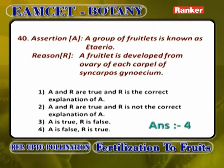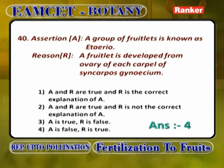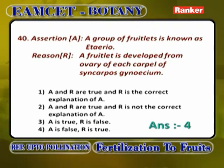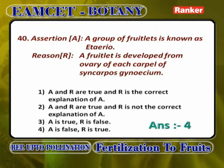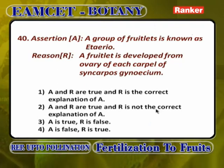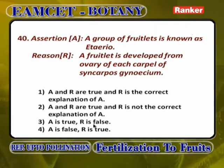A group of fruitlets known as eteria. A fruitlet is developed from ovary of each carpel of syncarpous gynoecium is wrong — it is not syncarpous but apocarpous. A is true (eteria is a group of fruitlets), R is false (it should be apocarpous gynoecium, not syncarpous). Answer: 3.